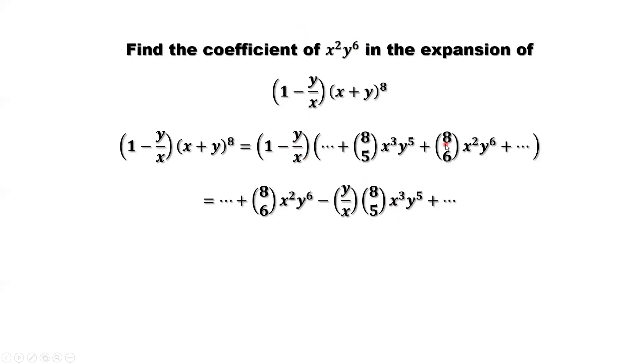So we need this one. This one times this one, you have y times y⁶, which is y⁷. Doesn't match this one. So we only need those two terms. With those two terms containing x²y⁶, we can factor those constants out.